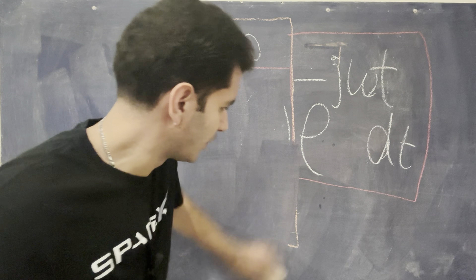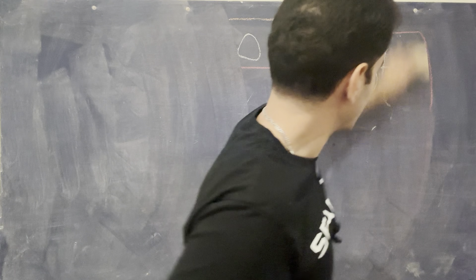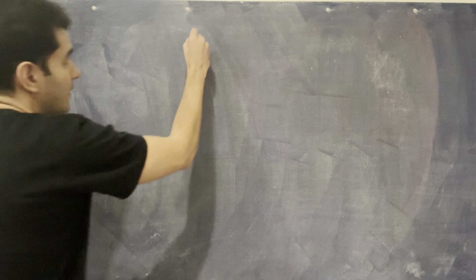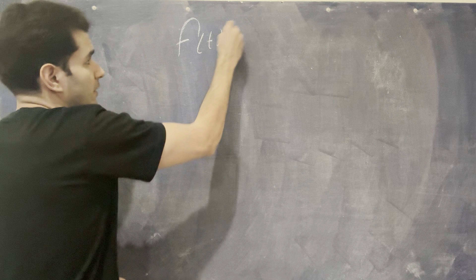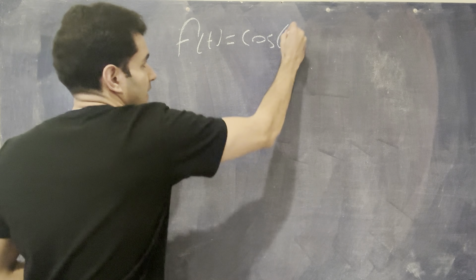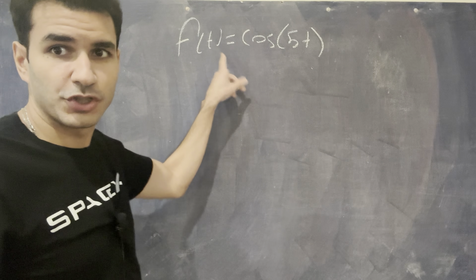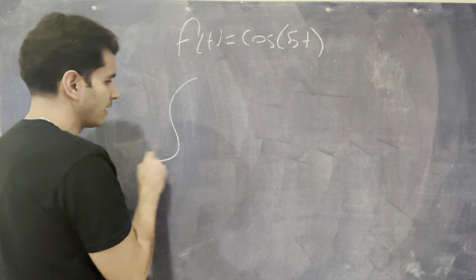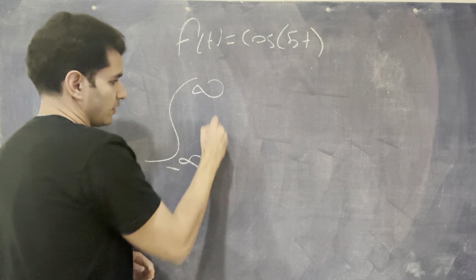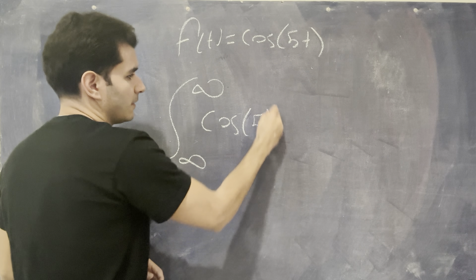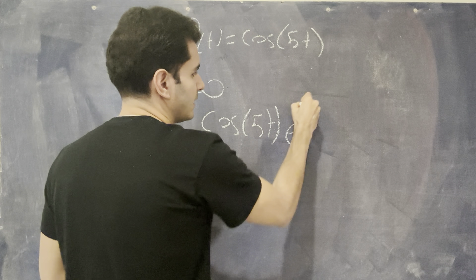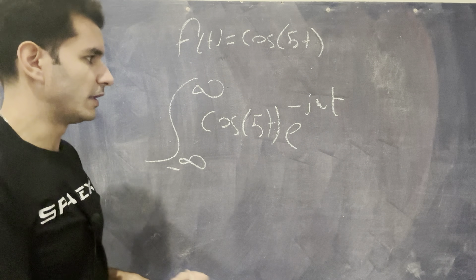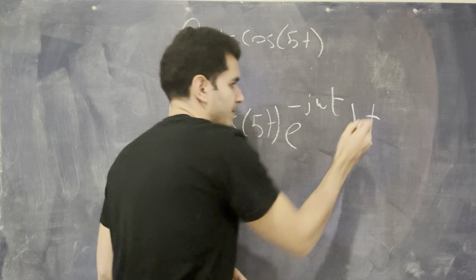Starting with a very simple Fourier transform — you've seen many Fourier transforms represented with sinusoids, something as simple as f(t) = cosine(5t). Suppose I want to take the Fourier transform of this. The Fourier transform is basically taking the integral of f(t) and multiplying it by e to the minus j omega t, all integrated with respect to time.